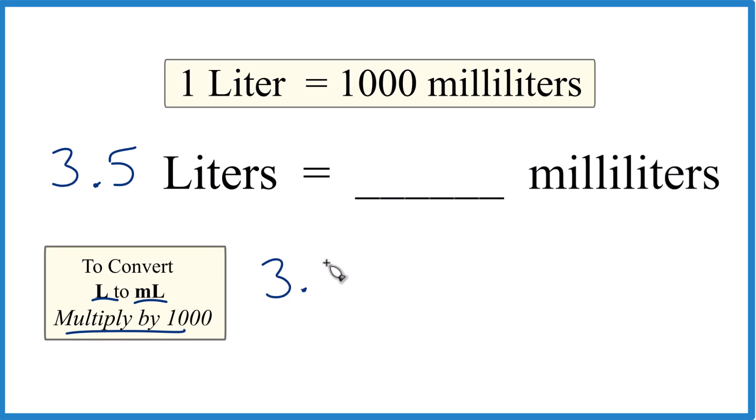So we take our 3.5 liters and we're going to multiply that times a thousand. And that's a thousand milliliters in one liter. That's our conversion factor. There's milliliters per liter there.